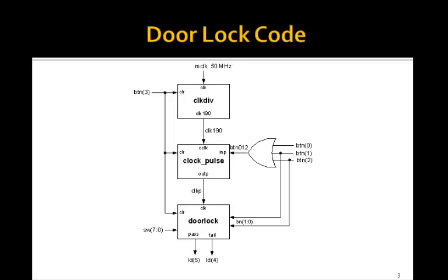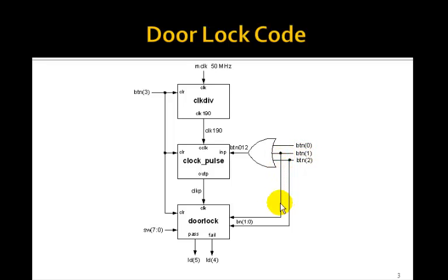To test it, we'll make a top-level design where the three input buttons — button zero, button one, and button two — go through an OR gate, so any button press generates a clock pulse. Button one and button two connect to a two-bit input called BN one to zero. Pressing button zero gives BN = 0-0; pressing button one gives 0-1; pressing button two gives 1-0. These three possible button settings correspond to buttons zero, one, and two. Then we make a state diagram for the door lock module with two outputs: pass and fail.